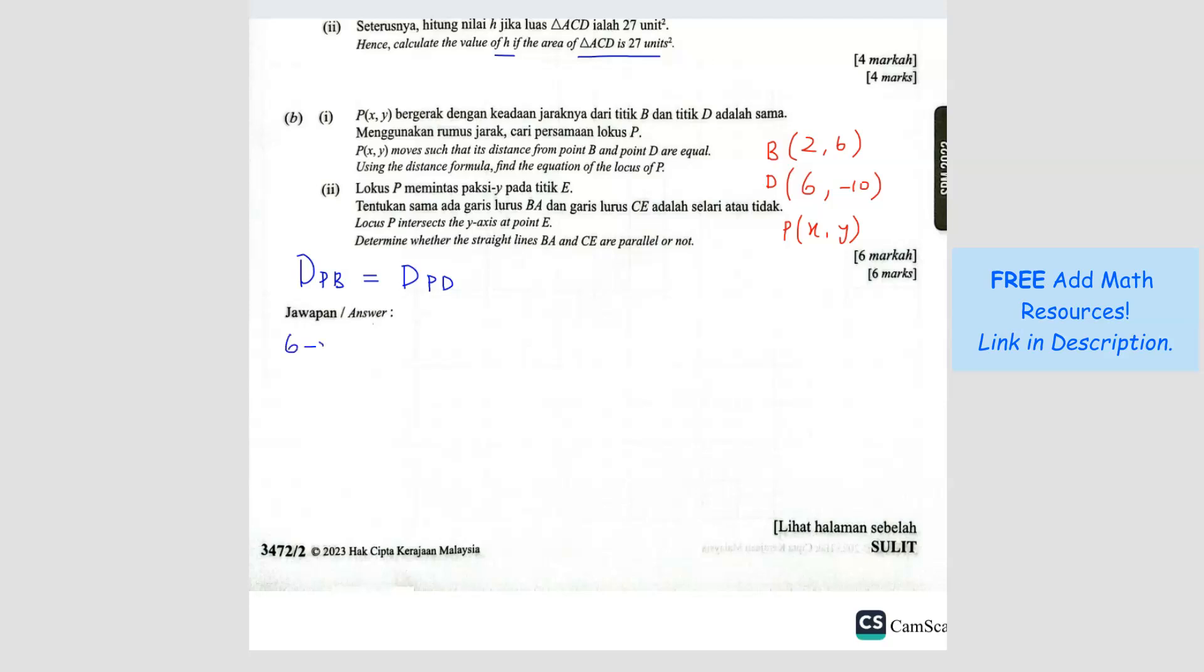So we can do, I do B first. 2 minus X square plus 6 minus Y square, square root of this, equals to 6 minus X square plus negative 10 minus Y square. So square root and square root cancel. So now just expand this, you get 4 minus 4X plus X square plus 36 minus 12Y plus Y square equals 36 minus 12X plus X square plus 100 plus 20Y plus Y square.